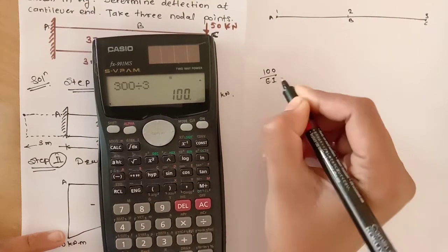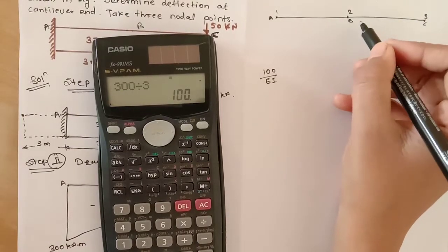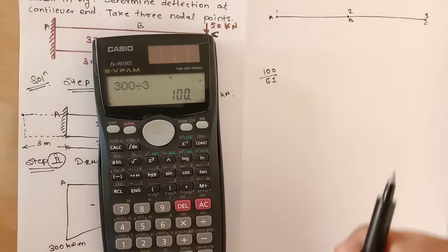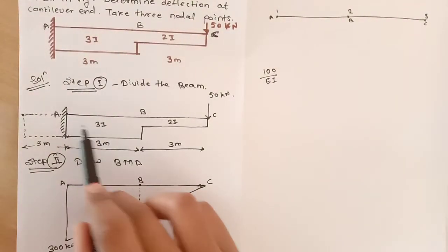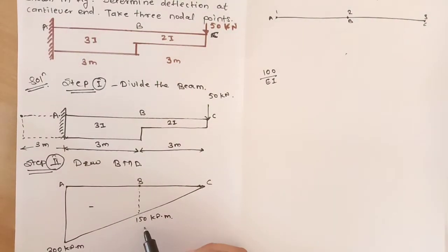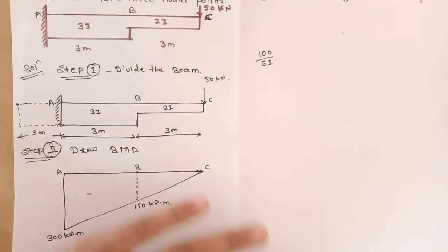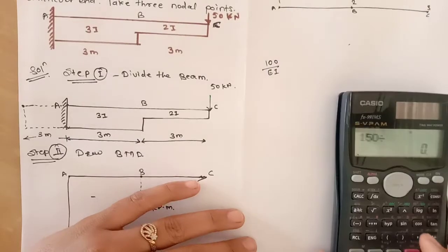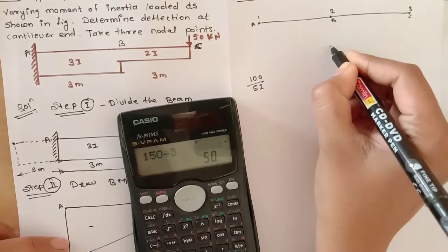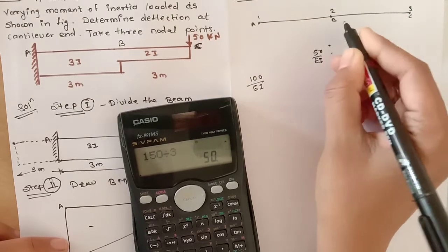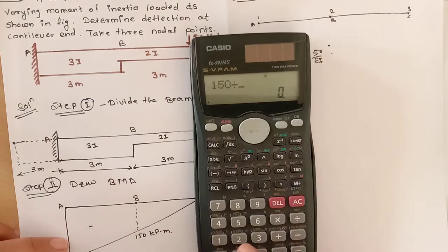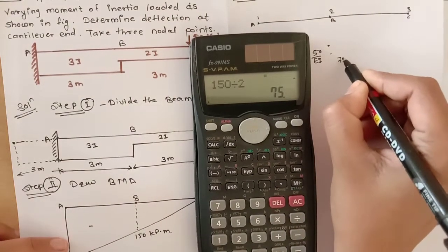At point B, two members meet: the AB member and the BC member. For the AB member, the moment is 150 kN·m, so M/EI is 150 divided by 3I, giving 50/EI. For the BC member, the moment is also 150, divided by 2I, giving 75/EI.